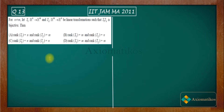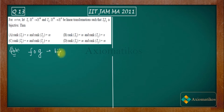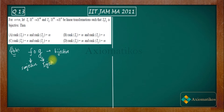Let me begin with a concept from class 12th. If we have two functions f and g, and their composition fog is bijective, then we can conclude that f will be surjective and g will be injective. So if the composition of f and g is bijective, f is surjective and g is injective.